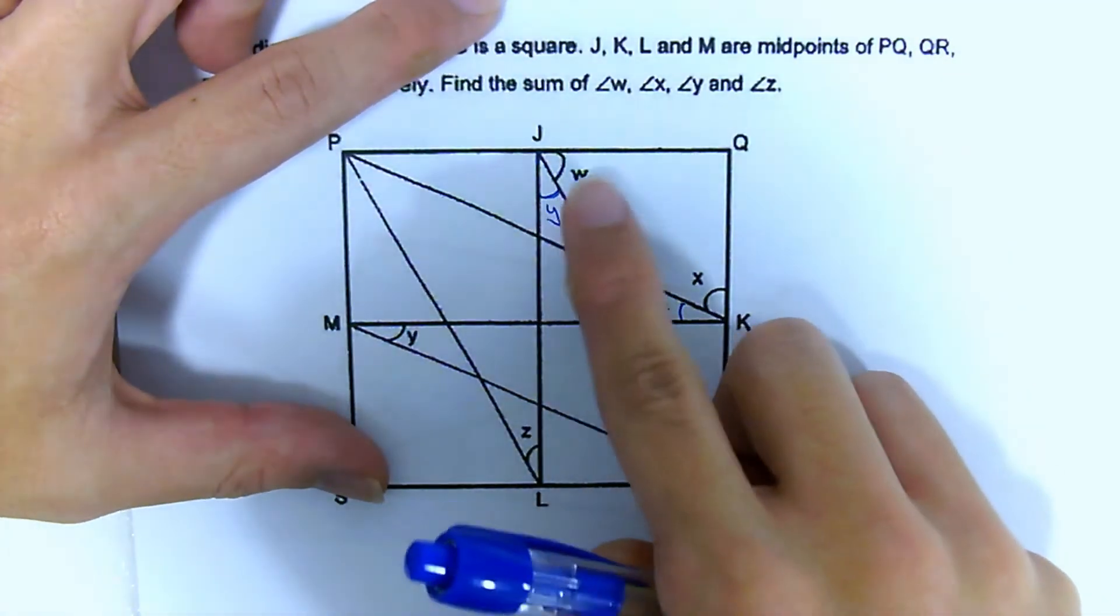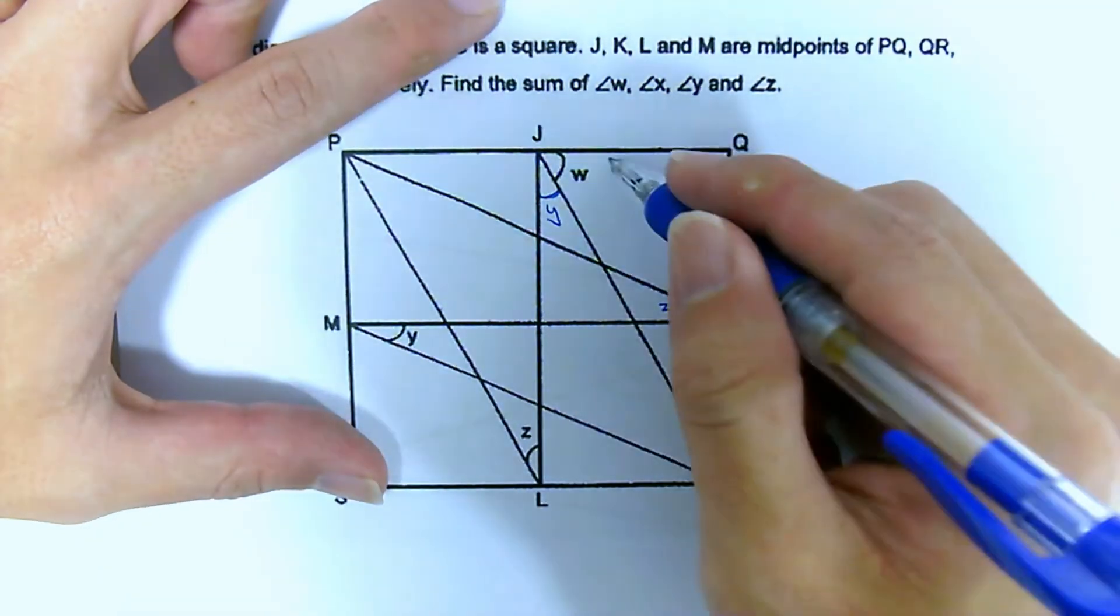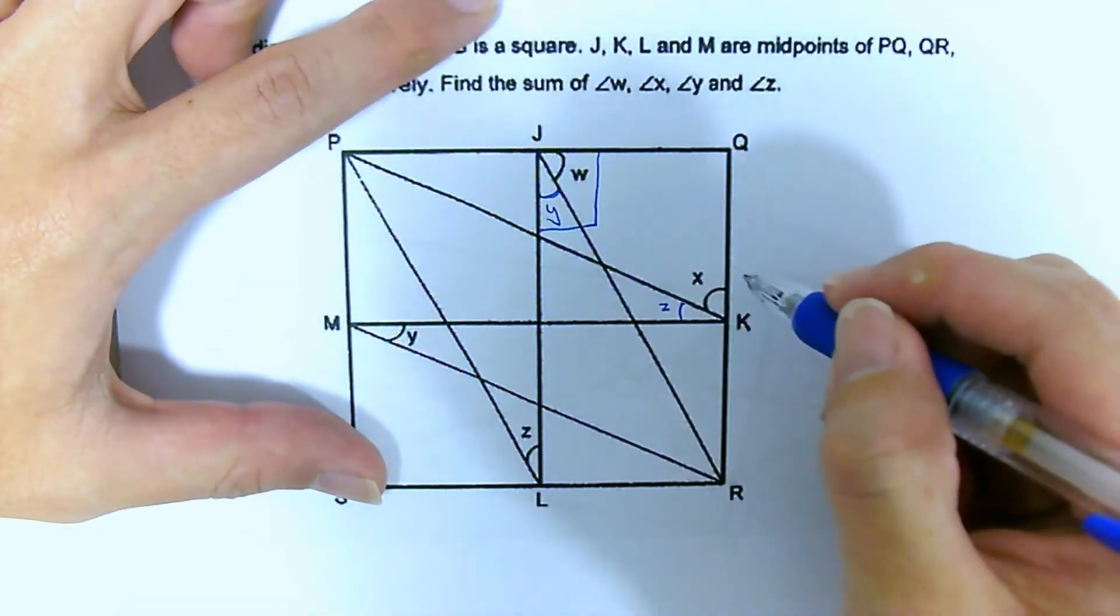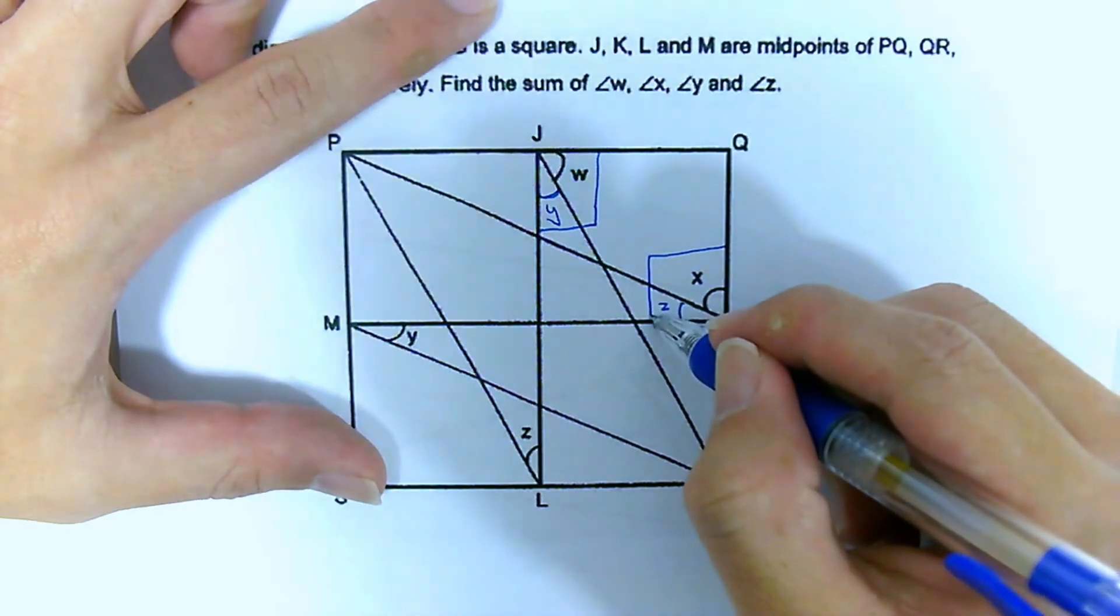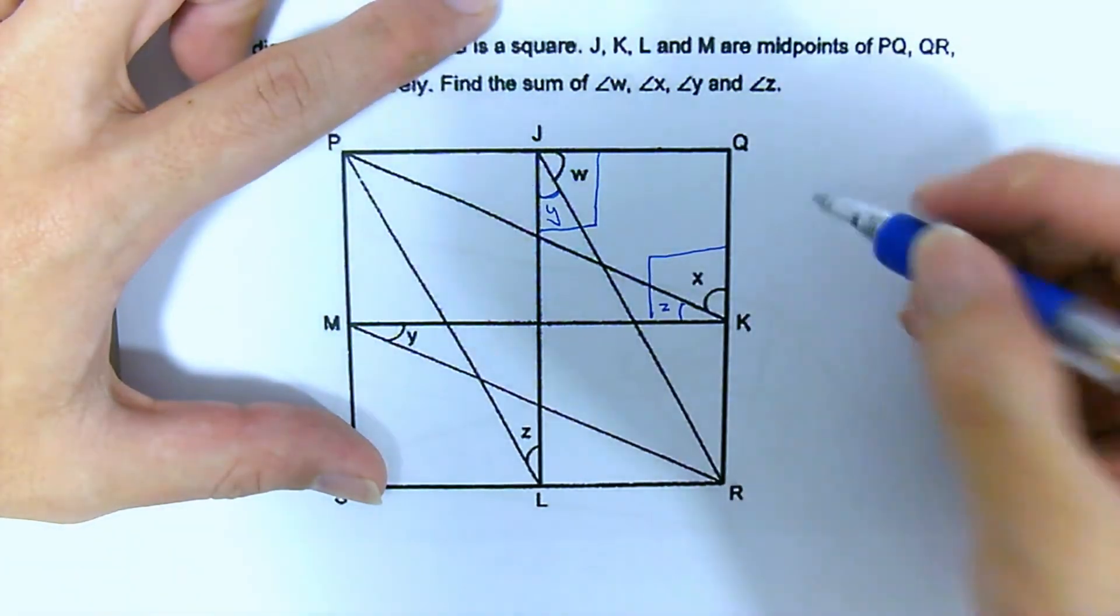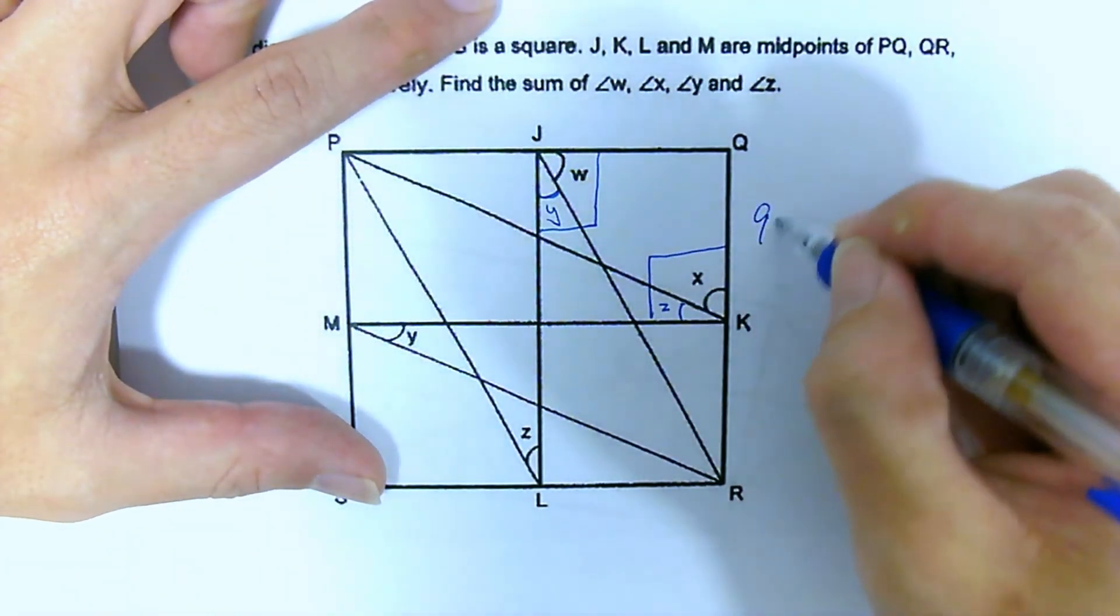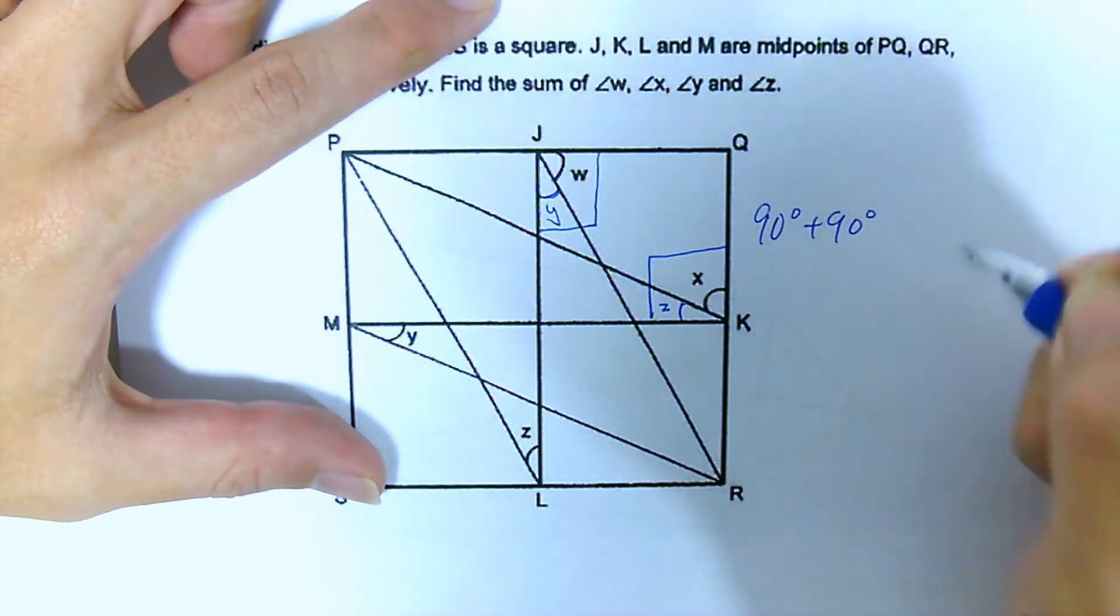And since this Y and this W, and then this is Z and this X, you realize that these two angles form a right angle. And these two angles form a right angle. So total is, the sum will be 90 plus 90. Equal 180.